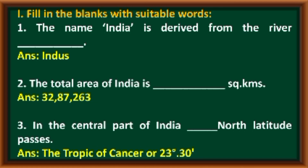...32,87,263 square kilometers. In the central part of India, the Tropic of Cancer, or 23 degrees 30 minutes north latitude, passes.